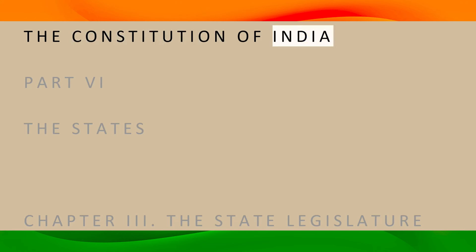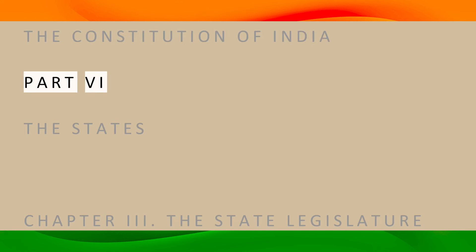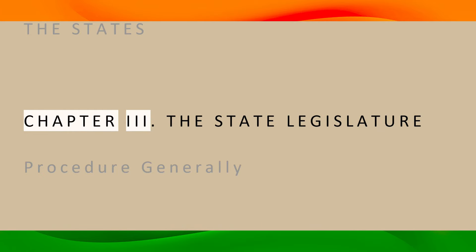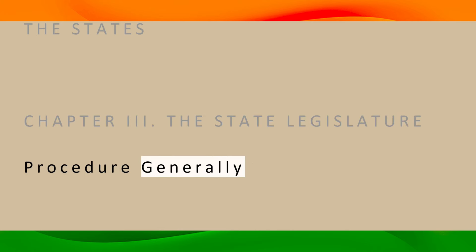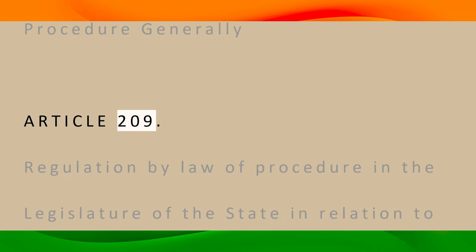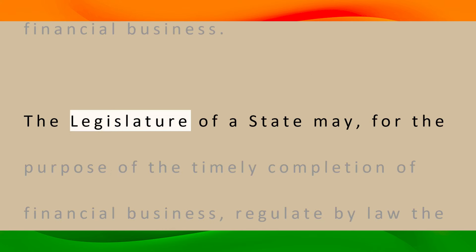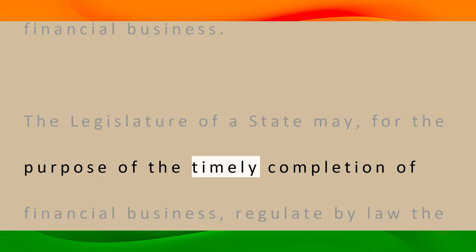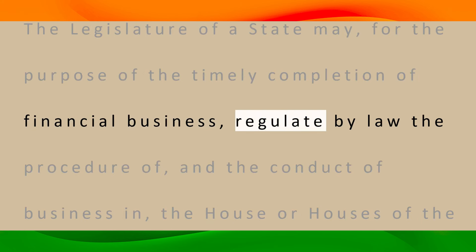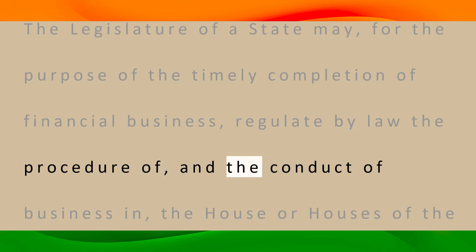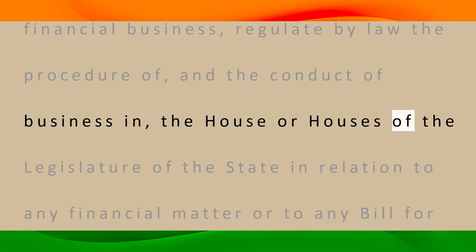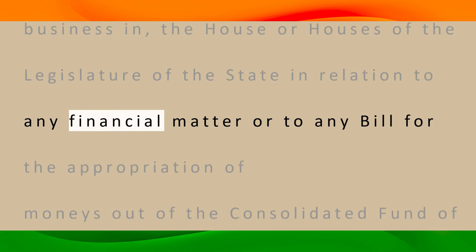The Constitution of India, Part 6 — The States, Chapter 3 — The State Legislature, Procedure Generally. Article 209: Regulation by law of procedure in the legislature of the state in relation to financial business. The legislature of a state may, for the purpose of the timely completion of financial business, regulate by law the procedure of and the conduct of business in the house or houses of the legislature of the state in relation to any financial matter or to any bill for the appropriation of moneys out of the Consolidated Fund of the State.